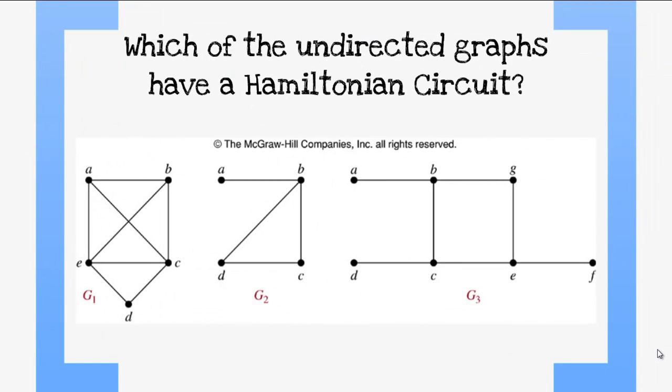Which of the following undirected graphs have a Hamiltonian circuit? If we look at the pictures, we can see that graph 1 has a Hamiltonian circuit, followed by using the path A, B, C, D, E, A. It goes through each vertex exactly once and ends back up at the original vertex.